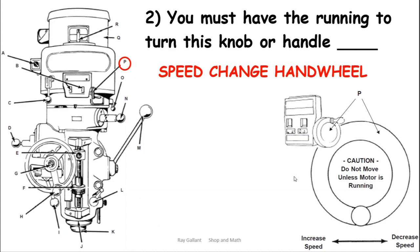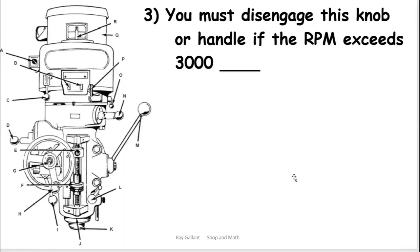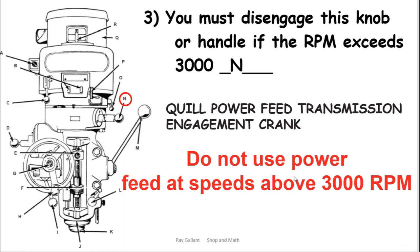Change speed handle: you must disengage this knob or handle if RPM exceeds 3000 RPM. Your power quill feed transmission engagement crank, not above 3000.